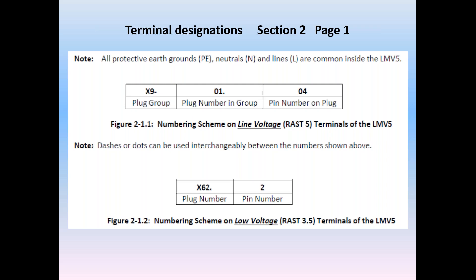Smaller green terminals are placed along the sides of the LMV for low voltage connections. These terminal designations only have two parts, which would be their plug number and their PIN. I'll go into more detail shortly.